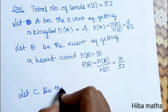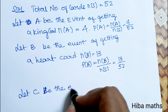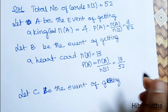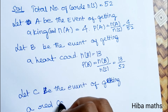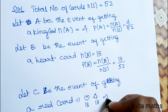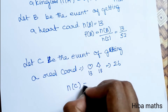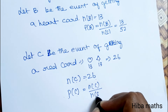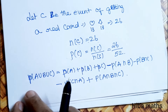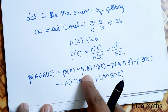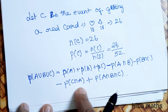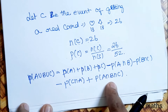Let C be the event of getting a red card. There are 26 red cards, so P(C) = 26 by 52. Now we will write the formula: P(A union B union C) = P(A) + P(B) + P(C) minus P(A intersection B) minus P(B intersection C) minus P(C intersection A) plus P(A intersection B intersection C).